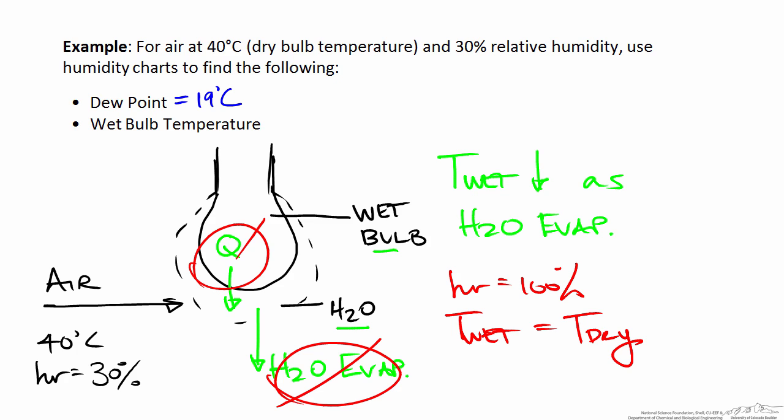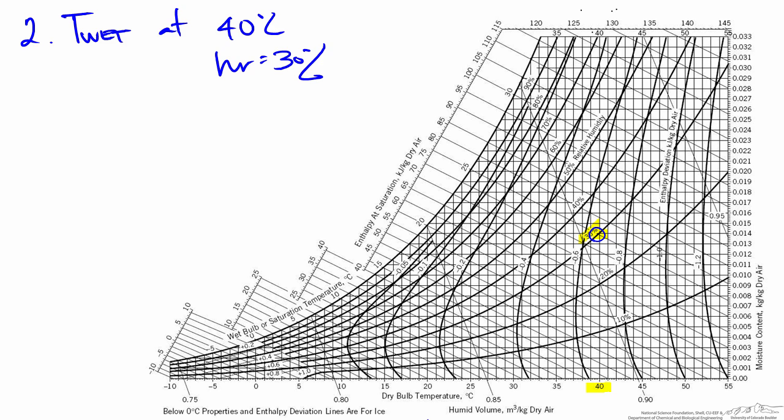There will never be a situation where the wet bulb temperature is greater than the dry bulb temperature. How much the wet bulb temperature is lower than the dry bulb is a function of the moisture content. So in our case of 30% relative humidity, we can look to the humidity charts to find the wet bulb temperature. The point on the chart where our air is at 40 degrees and 30% relative humidity is shown again, and we find the wet bulb temperature by moving from this point along lines of constant wet bulb temperature — the diagonal lines across the chart — until we reach the saturation curve.